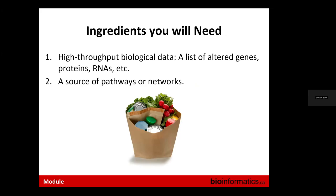You only need two types of ingredients to do pathway and network analysis. First, you need a high-throughput biological data set — such as a list of altered genes, proteins, or RNAs — which can come from proteomics, kinase screens, RNA-seq, or single-cell RNA techniques, with a large sample size and hopefully many perturbations. Second, you need a framework of annotated pathways and/or gene networks to work with.